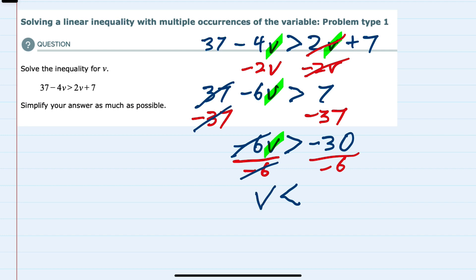is less than, and then on the right-hand side we have a positive 5. So we have isolated the v on the left-hand side.